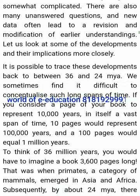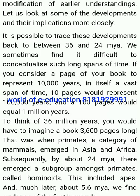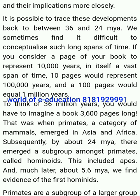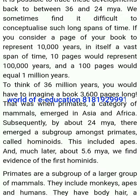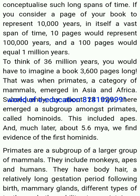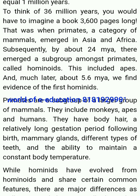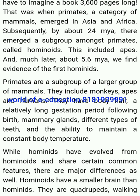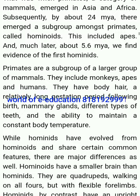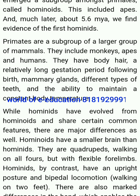It is possible to trace these developments back to between 36 and 24 million years ago. If you consider a page of your book to represent 10,000 years, then 10 pages would represent 100,000 years, and 100 pages would equal 1 million years. Think of 36 million years — you would have to imagine a book 3,600 pages long. That was when primates, a category of mammals, emerged in Asia and Africa. Subsequently, by about 24 million years ago, there emerged a subgroup amongst primates called hominoids, which included apes. And much later, about 5.6 million years ago, we find evidence of the first hominids. Primates are a subgroup of a larger group of mammals — they include monkeys, apes and humans.